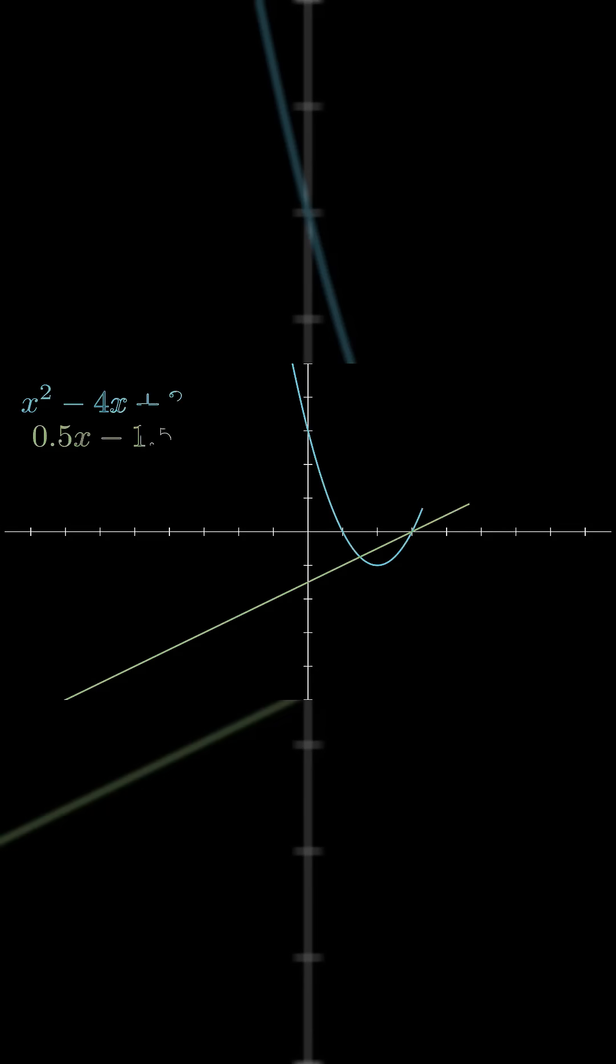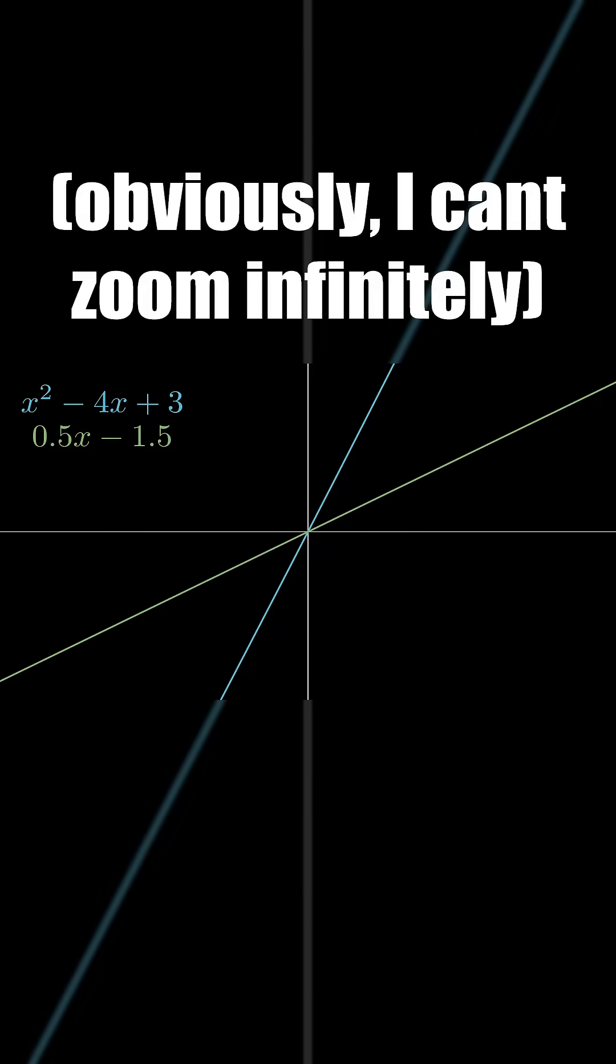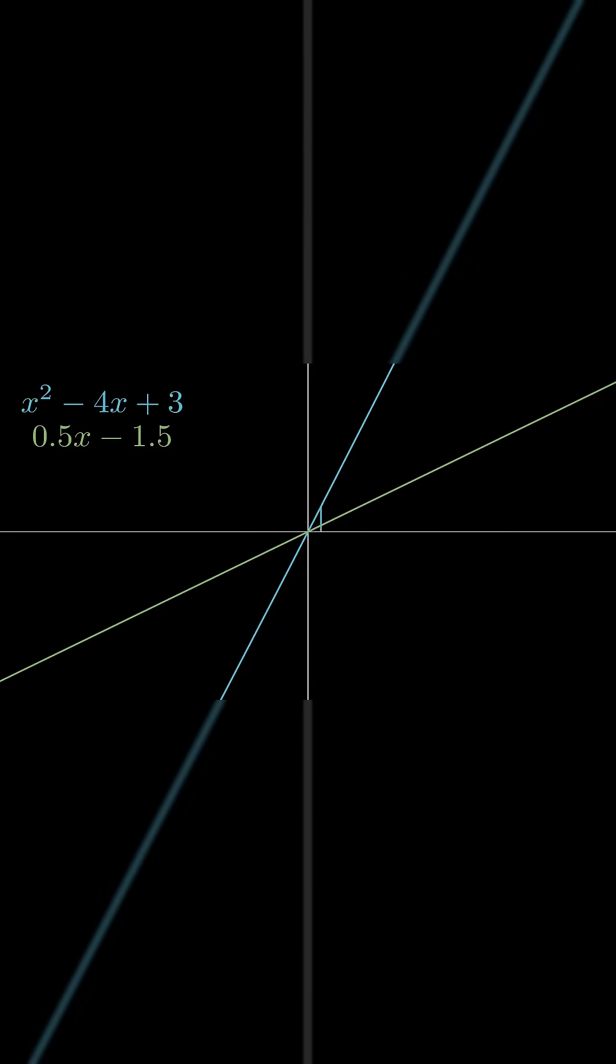First draw a graph with the two functions, and infinitely zoom on x equals 3, where they both cross 0. This causes both functions to look like a straight line. Move away from x equals 3 by an infinitely small amount, which we will call dx, difference in x.